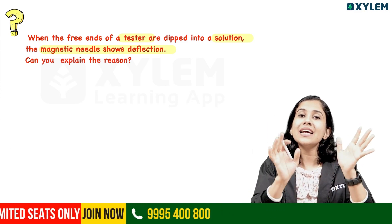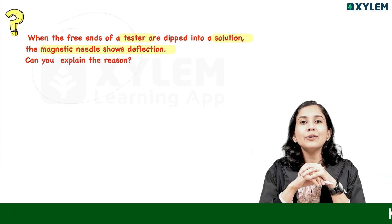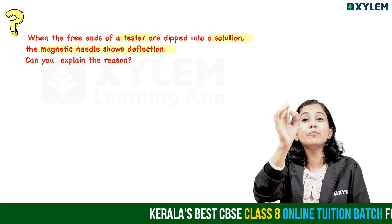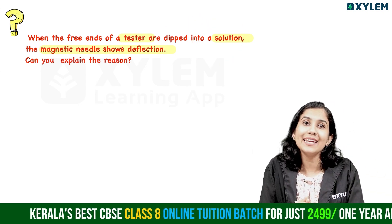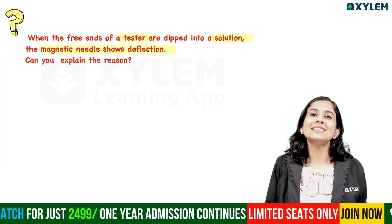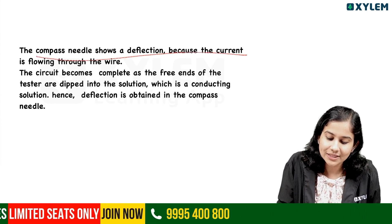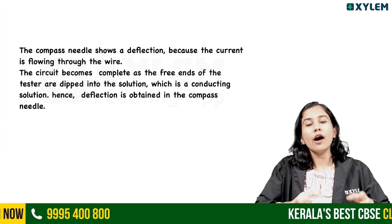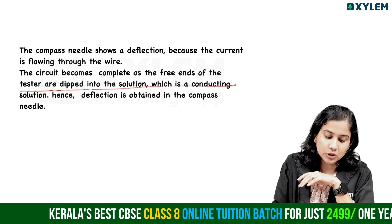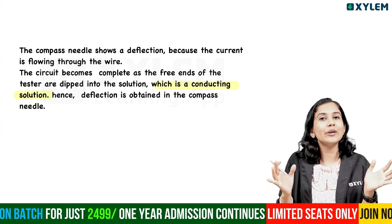How to complete a circuit and how to deflect this magnetic needle. That's the reason — we have to take the circuit and complete it. The most important point is how to use a conducting solution. In this experiment, how to use a conducting solution to make the magnetic needle deflect. The circuit becomes complete as the free ends of the tester are dipped into the conducting solution. The circuit is complete.